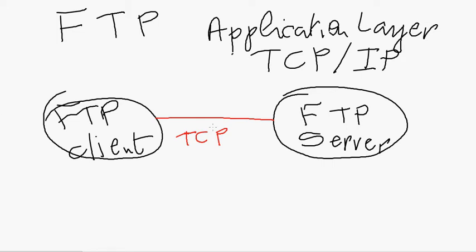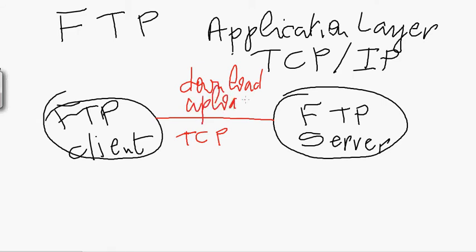The FTP client will initiate opening a connection with the FTP server to request to download some files. It can either download a file from the FTP server or upload a file to the FTP server. These two operations can be done through the File Transfer Protocol.